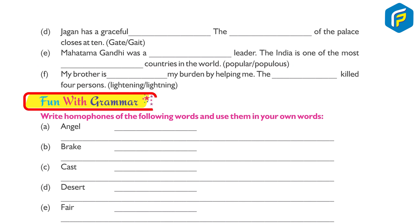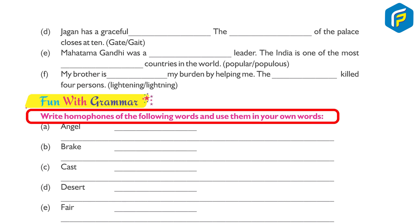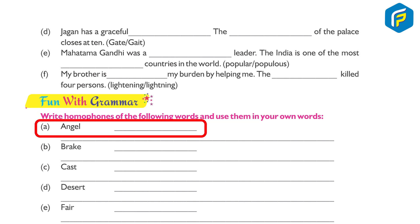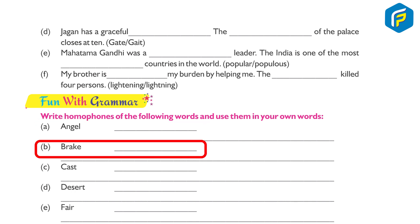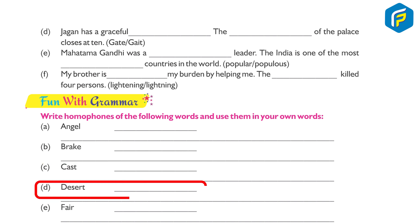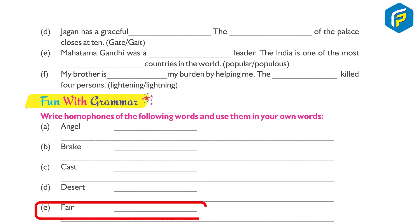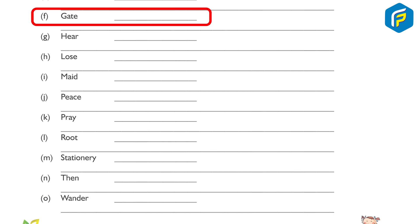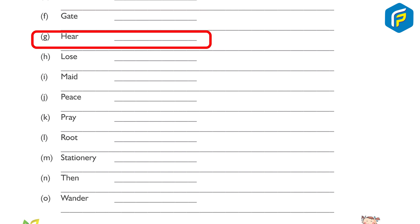Fun with Grammar — write homophones of the following words and use them in sentences: (a) Angel / Angle — 'I find it easy to draw the right angle.' (b) Brake / Break — 'The show must go on; don't break a leg.' (c) Cast / Caste — 'Caste and creed often lead to corruption.' (d) Desert / Dessert — 'Chocolate can be considered the best dessert in the world.' (e) Fair / Fare — 'Last year my school organised a huge fair.' (f) Gait / Gate — 'The gate of my friend is awful.'